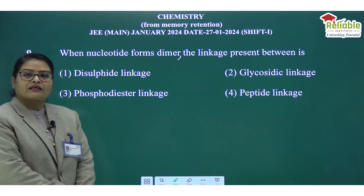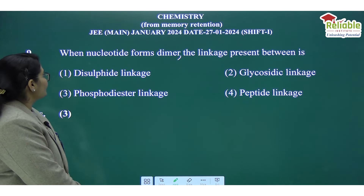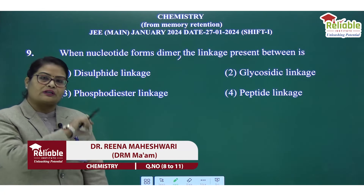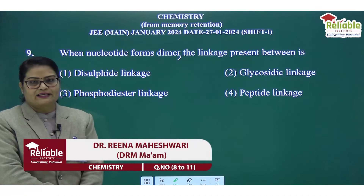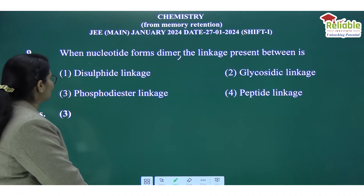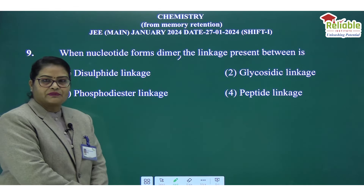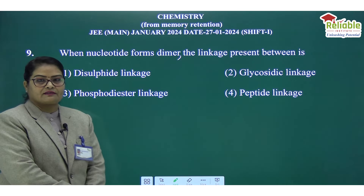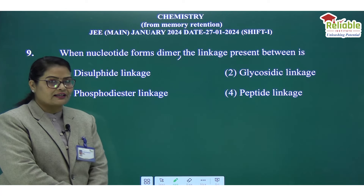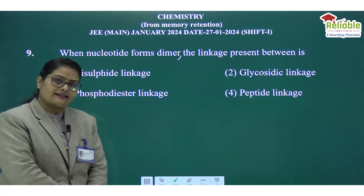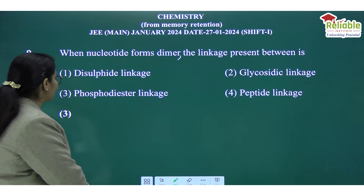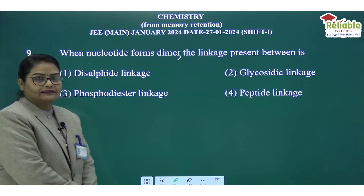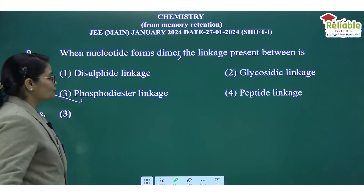The next question is related to biomolecules. When a nucleotide forms a dimer, what is the linkage present between them? The options are: disulfide linkage (mainly found in proteins), glycosidic linkage (found in carbohydrates like starch and cellulose, which are polysaccharides or disaccharides), phosphodiester linkage, and peptide linkage.